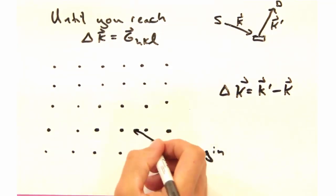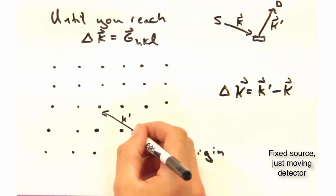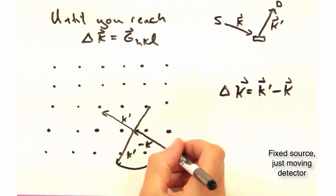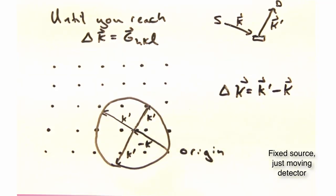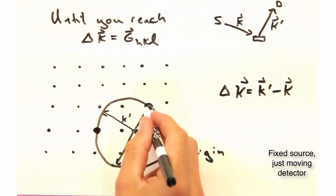And as we rotate our detector through all possible configurations, we effectively carve out a circle, or sphere in 3D, where the circle is a surface of all possible delta k conditions. So at the end of the day, the Ewald Sphere is a geometric way to visualize how and when we get constructive interference.